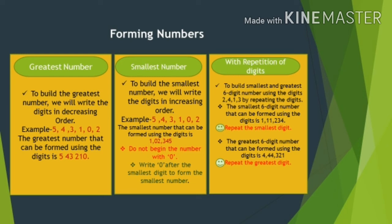Now let us understand the second situation. In this situation, you have to form the largest and smallest six-digit number using only four digits: 2, 4, 1, and 3. Since we have only 4 digits but need a 6-digit number, we will have to repeat some digit.